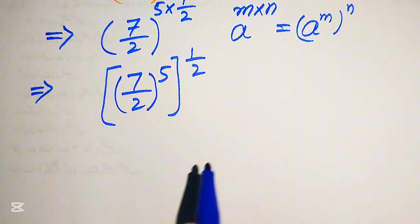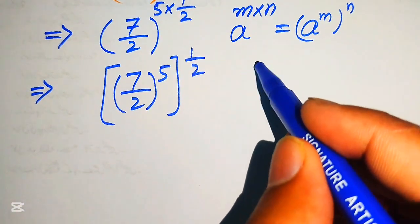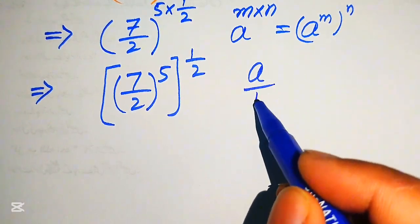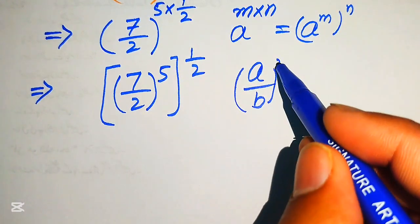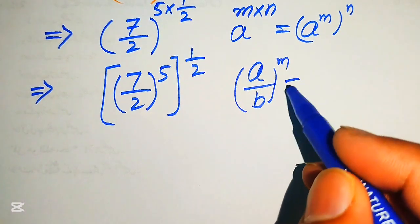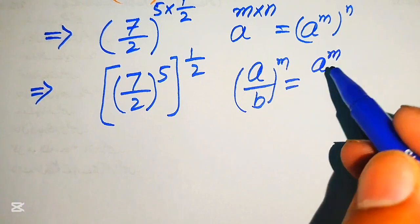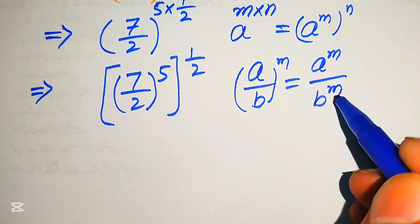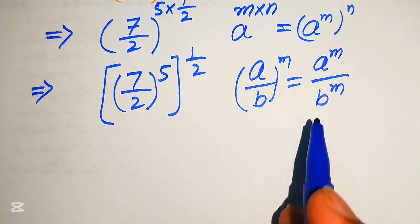Now we apply another exponent law: (a over b) to the power of m equals a to the power of m divided by b to the power of m.